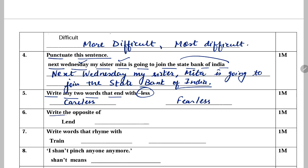Next: Write the opposite of 'lend'. Lend ka opposite hoga 'borrow'. Next: Write words that rhyme with 'train'. Rhyming words likhne hain — brain, rain.